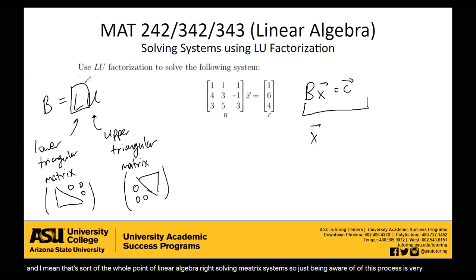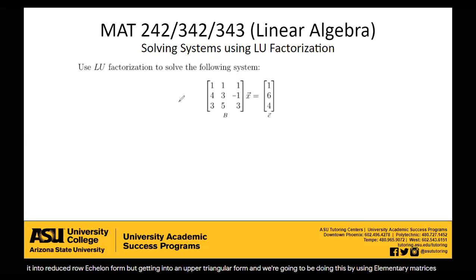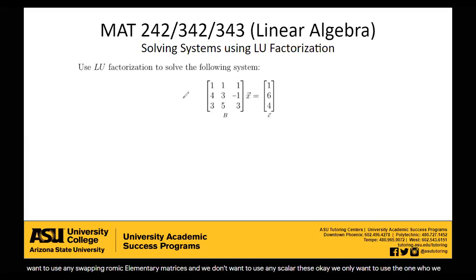So let's figure out exactly how do we find this L and this U. The way we find them uses elementary matrices. We're going to start with B and try to get it into upper triangular form using elementary matrices. The only elementary matrices we are going to use are the ones where we add multiples of one row to another. We don't want to use any row-swapping or scalar-multiple row elementary matrices — only the ones where we add multiples of one row to another, because the other types mess up this process.